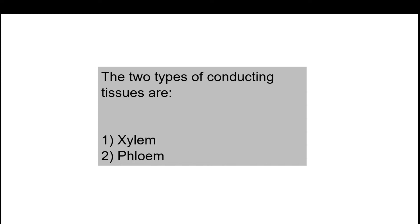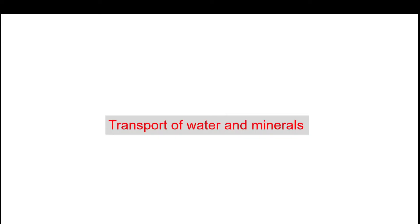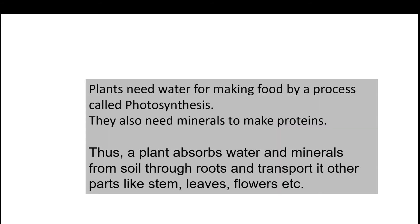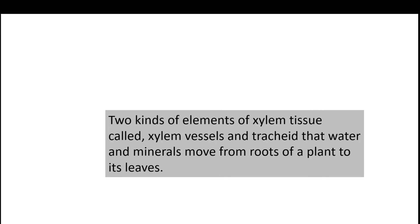One aspect is the transportation of water and dissolved minerals, and another is the translocation of food produced in the leaves to various parts of the plant body. There are two conducting tissues in plants: xylem and phloem. Plants need water for making food by photosynthesis and minerals to make proteins. A plant absorbs water and minerals from the soil through roots and transports them to other parts like stem, leaves, and flowers. Two kinds of elements of xylem tissue are xylem vessels and tracheids.